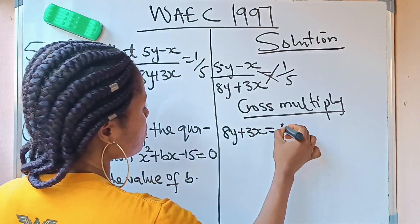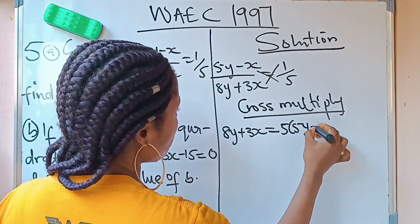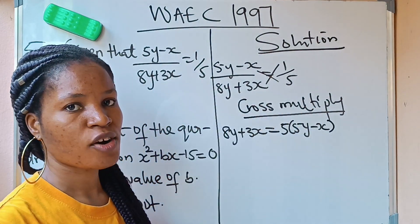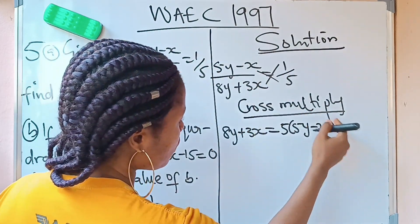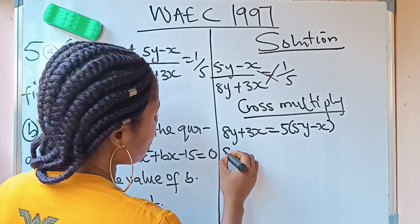Hope you are following me. That is, 1 times this gave me this, 5 times this is going to be 5 into this. So we are going to have 8y + 3x equals...